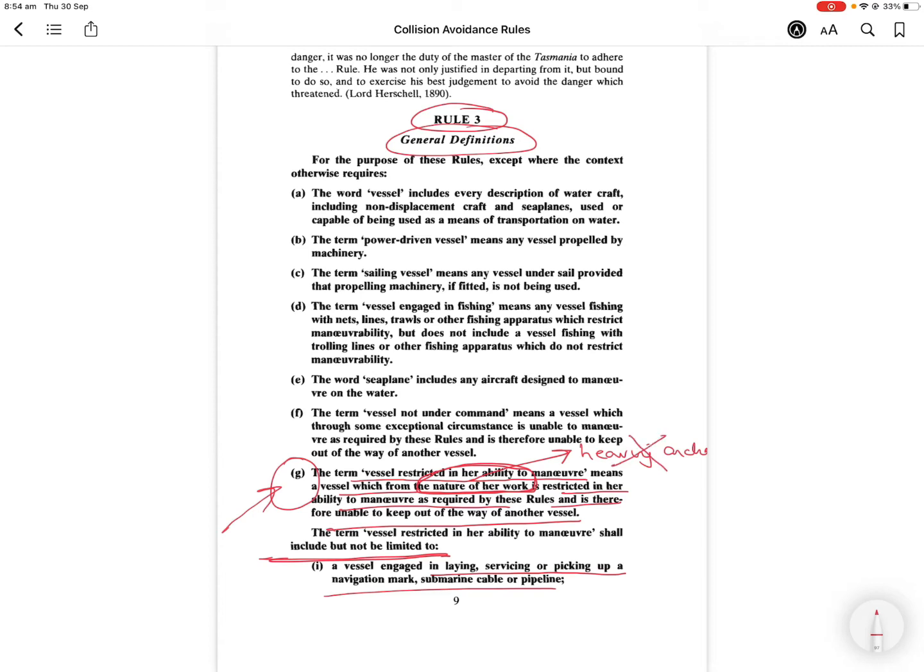Now if vessel B really wanted to claim that because of heaving anchors or because of riding to an anchor they were restricted, that should have been mentioned in the nature of the work which was drafted for vessel B. So in this case, vessel at anchor or heaving of the anchor is not considered restricted in ability to maneuver.